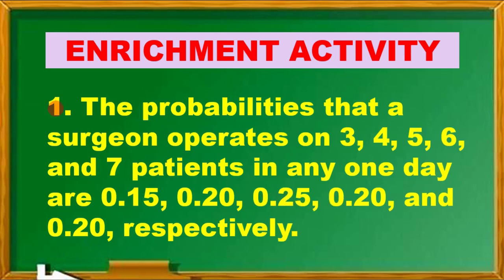Let's start with number 1. The probabilities that a surgeon operates on 3, 4, 5, 6, or 7 patients in one day are given as: 15% for 3 patients, 20% for 4 patients, 25% for 5 patients, 20% for 6 patients, and 20% for 7 patients per day.